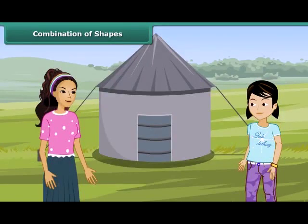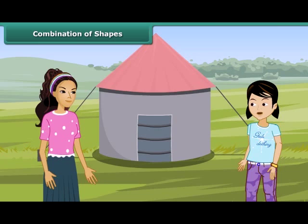Rita, look at this tent. This is made up of two shapes. Can you tell the name of the shapes? Yes, I can see the shapes. One is a cone and another is a cylinder. Correct.